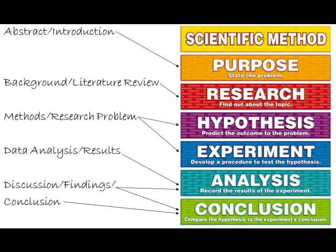Peer-reviewed research articles, or peer-reviewed journal articles, are articles that scholars — professors mainly — have written and published in peer-reviewed journals. A journal is the word that academics use to mean the same thing as a magazine. It's a collection of articles that have been published and are put out periodically throughout the year. Journals are usually put out four times a year, but they can be more frequent — monthly — or less frequent, even once a year.